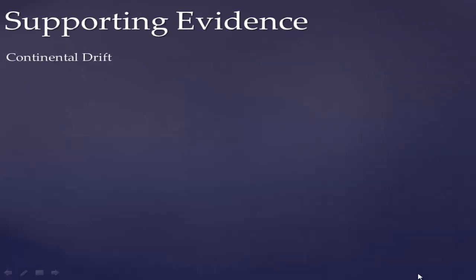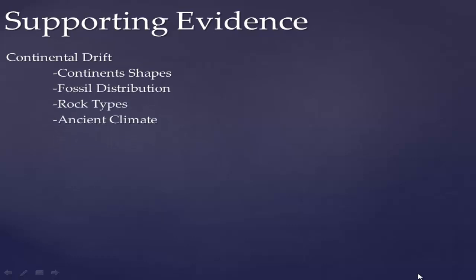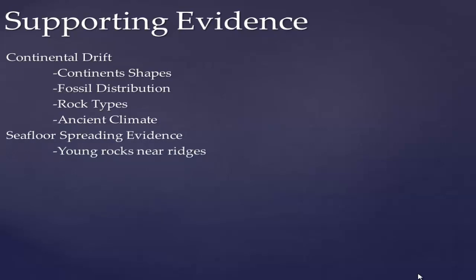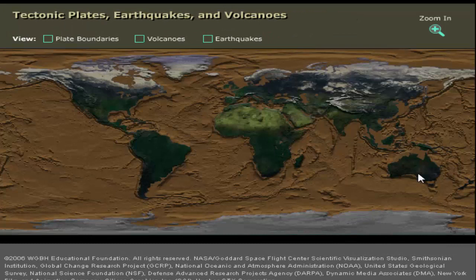We can take all of Wegener's continental drift evidence — the continental shapes, fossil distribution, rock types, and ancient climate — and apply it here. That all still supports the idea that continents were once together and have been moving. Then seafloor spreading evidence — younger rocks near the ridges and magnetic reversals — supports this. We can also use the locations of volcanoes and earthquakes to support the idea that plates are interacting and moving at plate boundaries.